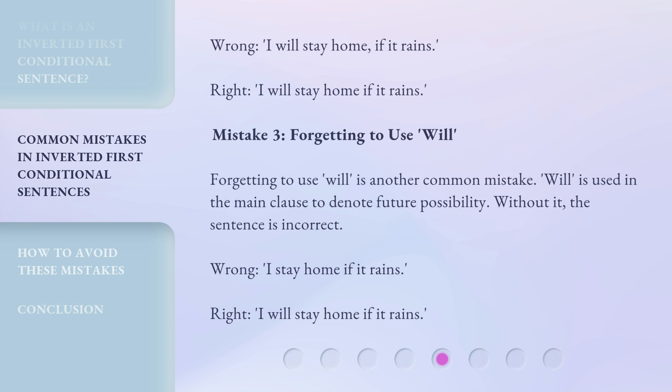Mistake 3: Forgetting to use 'will.' Forgetting to use 'will' is another common mistake. 'Will' is used in the main clause to denote future possibility. Without it, the sentence is incorrect. Wrong: 'I stay home if it rains.' Right: 'I will stay home if it rains.'